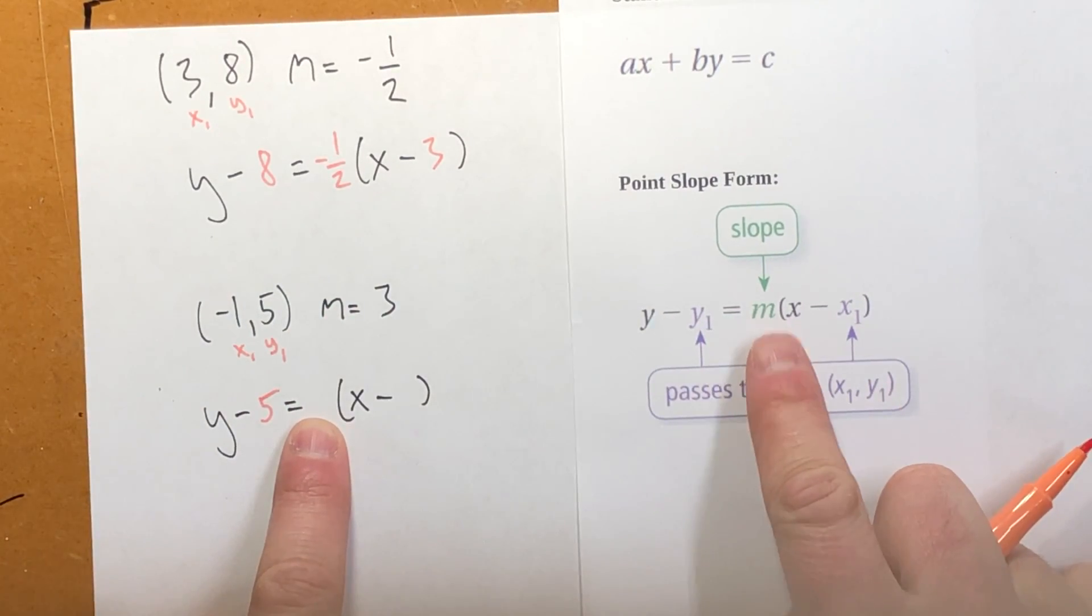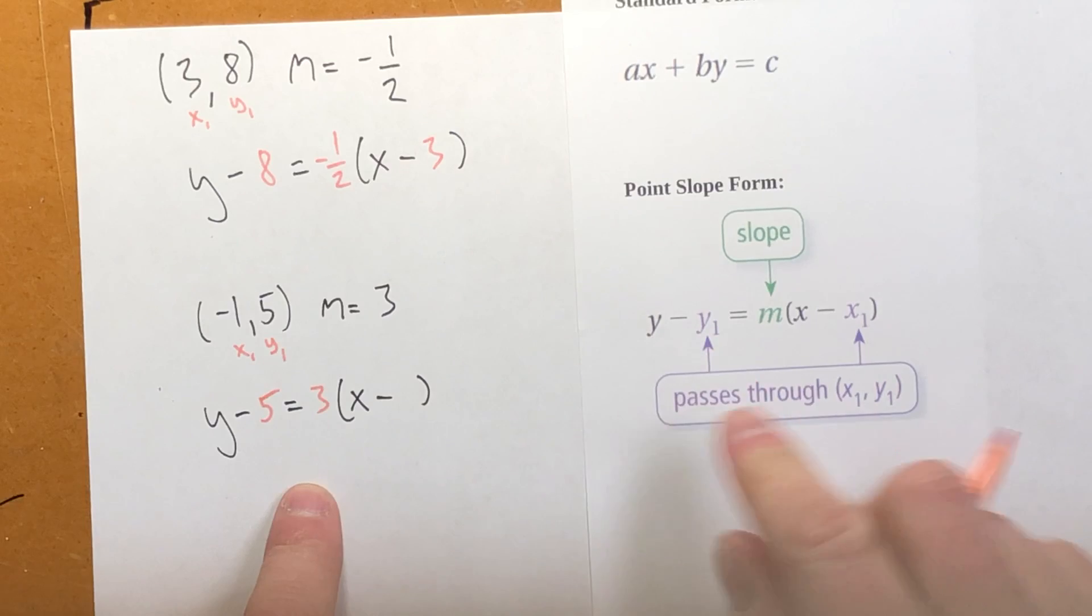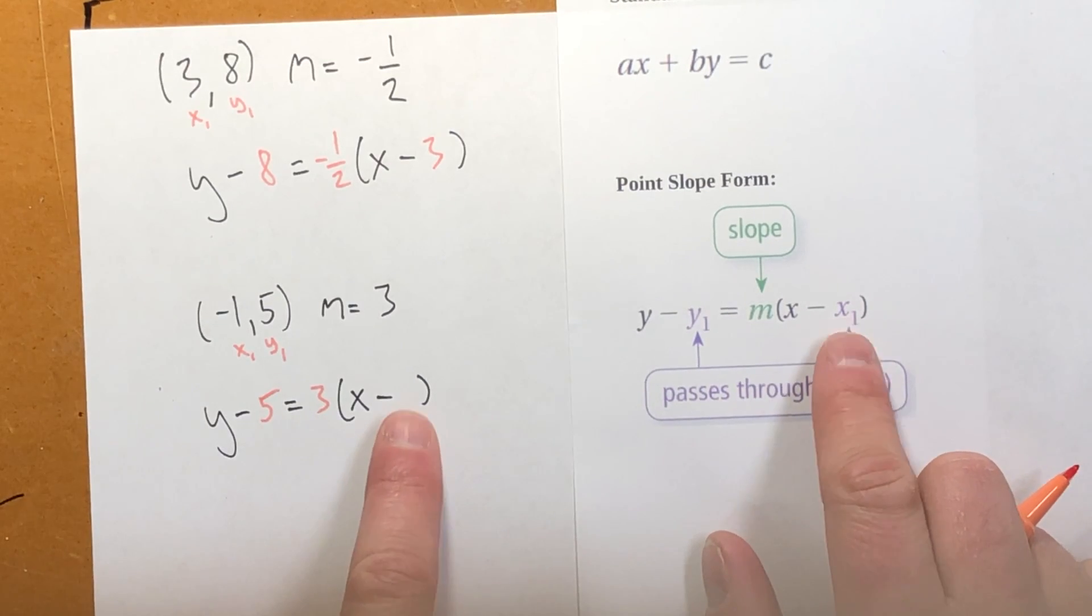This is my slope, which is 3. And this last spot is my x value, which is negative 1.